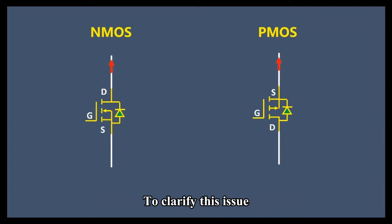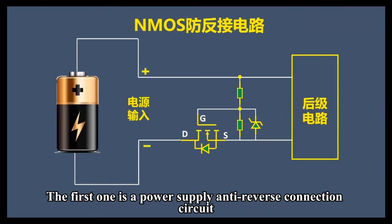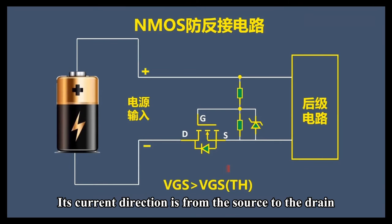To clarify this issue, we can look at two common circuits. The first one is a power supply anti-reverse connection circuit. This is an N-MOSFET power supply anti-reverse connection circuit, and its current direction is from the source to the drain.